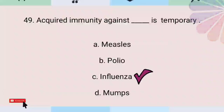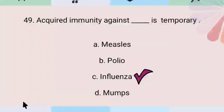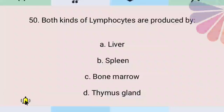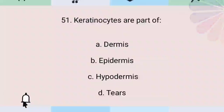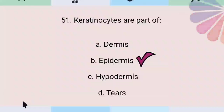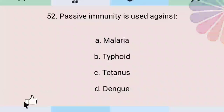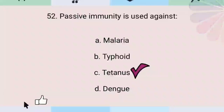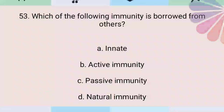Acquired immunity against influenza is temporary. Both kinds of lymphocytes are produced by bone marrow. Keratinocytes are part of the epidermis. Passive immunity is used against tetanus. Which of the following immunity is borrowed from others? The correct answer is passive immunity.